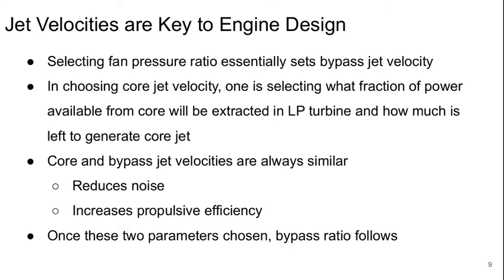So the jet velocities are really the key to the engine design. When we set the fan pressure ratio, we're essentially setting the bypass jet velocity. And when we choose the core jet velocity, what we're really selecting is what fraction of power available from the core is going to be extracted in the LP turbine and how much is left over to generate core thrust or the core jet. The core and bypass jet velocities are always going to be similar, and the reasons for this is that it reduces noise and increases propulsive efficiency. Once we choose these two parameters, the bypass ratio follows.